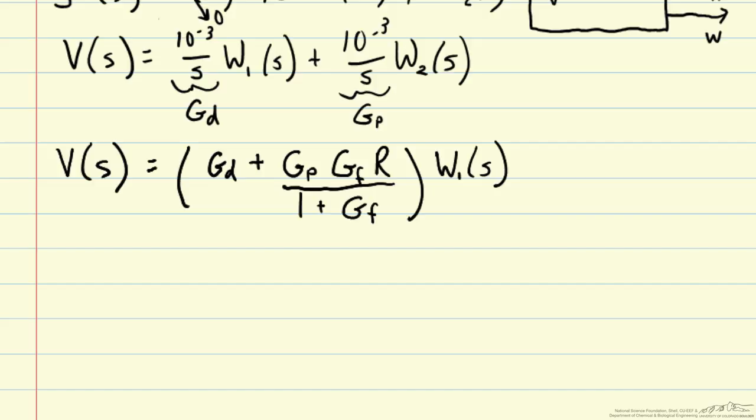We have gd and gp for the process, but we still need gf. Typically, one might use a PI controller in order to get rid of steady state error, so that w2 can track its set point. But here, for simplicity of analysis and derivation, we'll consider a proportional controller with kp.